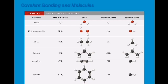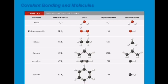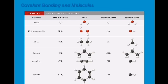For ethane C2H6, the empirical formula is CH3, since the numbers are divisible by 2. Propane C3H8 has the same molecular and empirical formula. Acetylene C2H2 simplifies to CH. Benzene C6H6 also simplifies to CH because both numbers are divisible by 6.